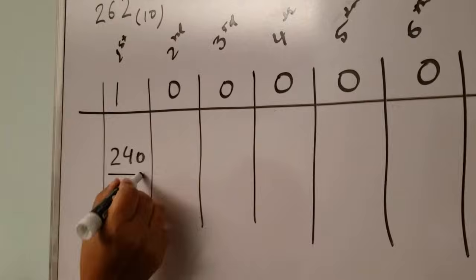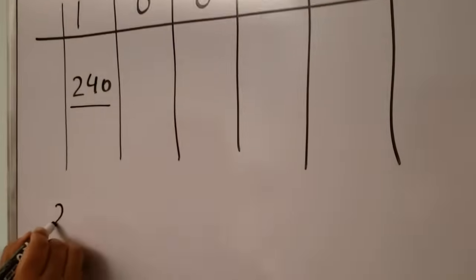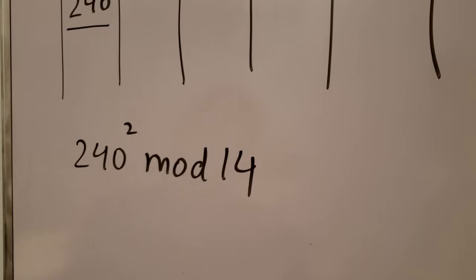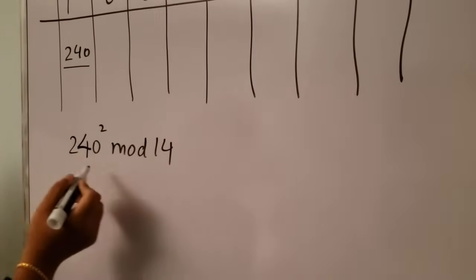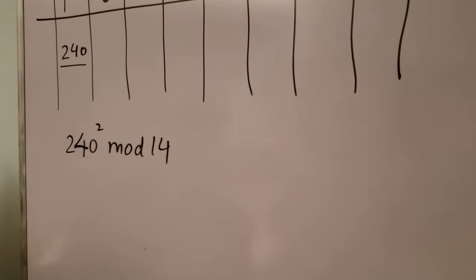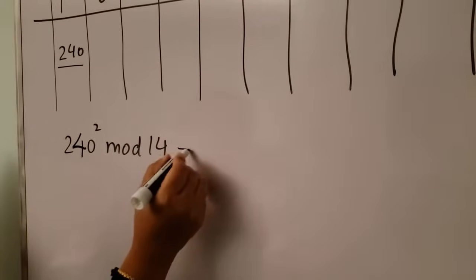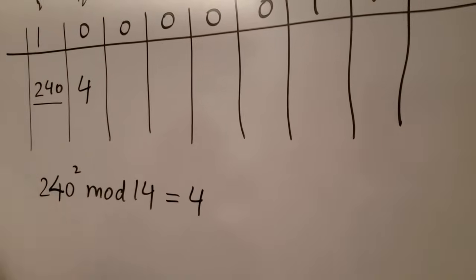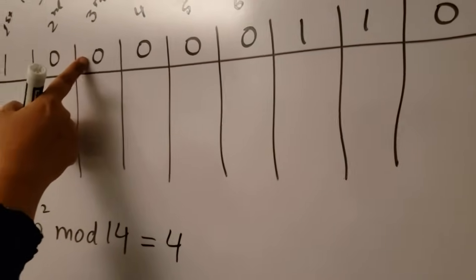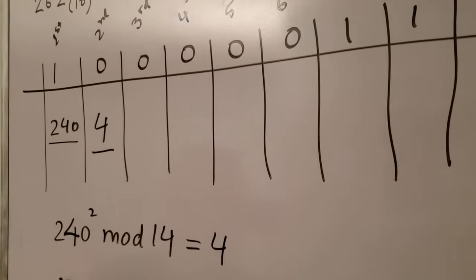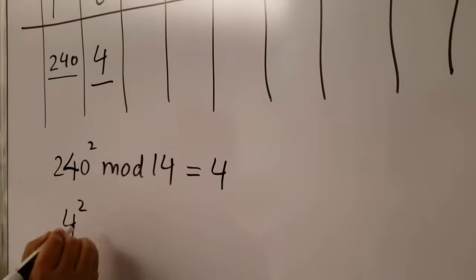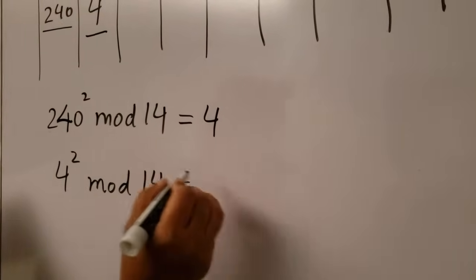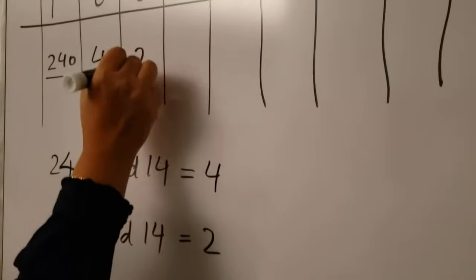Take the number from column one, square it, and take modulo 14. The square mod 14 is easy to calculate by hand — you won't need a calculator — and it equals four. Write four in the second column. Now look at the binary digit of the third column, which is again zero. Take two, square it, and modulo 14, which equals two. Write two in the third column.